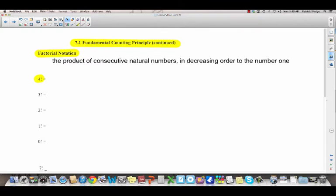The product, we know what product means. Product means multiplying. Consecutive, that means one after the other. Natural, you know what natural numbers are? They're the counting numbers starting at 1: 1, 2, 3, 4, 5, 6, 7, 8, 9. No negatives, no fractions, no decimals, like that. And in decreasing order to the number 1.